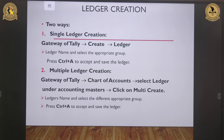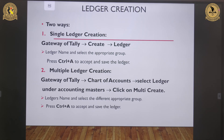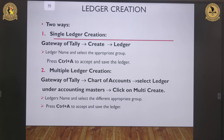Now let's understand the procedure for creating a ledger. Like the group, there are two ways: single ledger and multiple ledger. For single ledger, follow Gateway of Tally > Create > Ledger, provide the ledger name and select the group it belongs to, then accept and save. For multiple ledgers, follow Gateway of Tally > Charts of Accounts > select Ledger under Accounting Master > click Multi Create, provide the necessary information like ledger name and group, then accept and save.